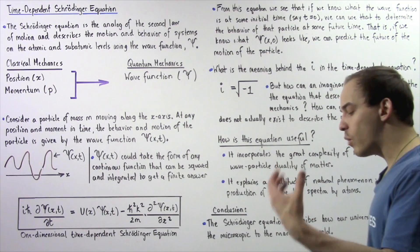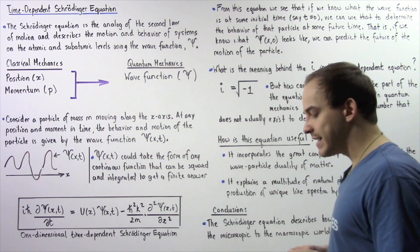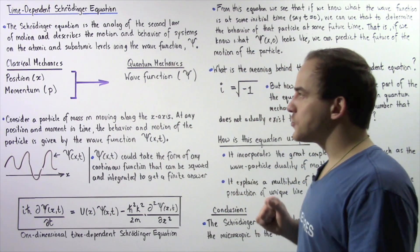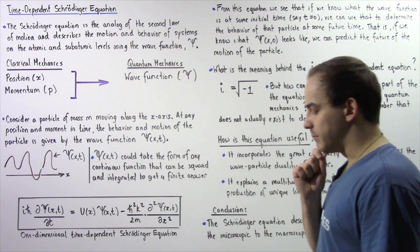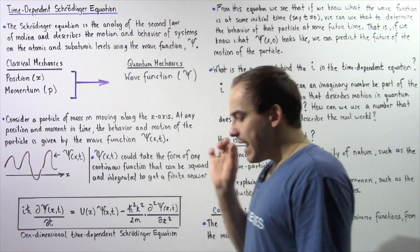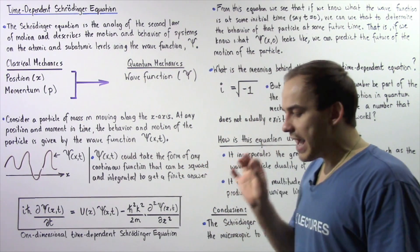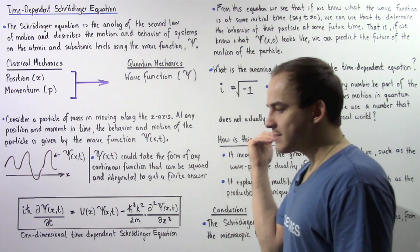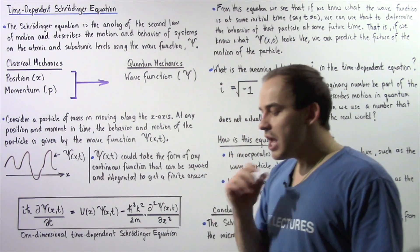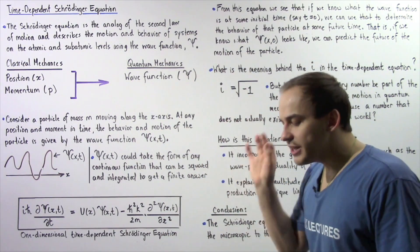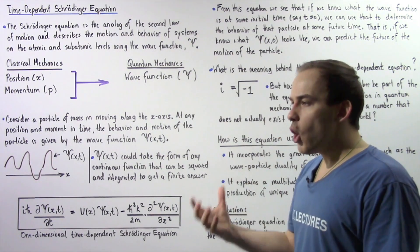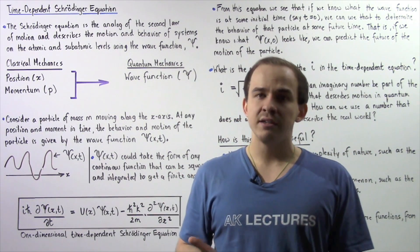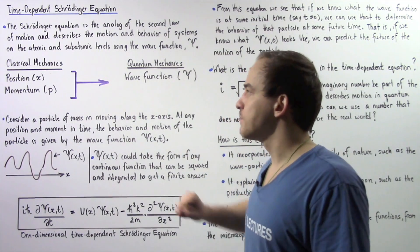So what exactly does the wave function do in quantum mechanics? Let's go back for just a moment to classical mechanics. In classical mechanics, if we have an object moving along the x-axis in one dimension, to completely describe the motion of that object, all we need to do is calculate two quantities.